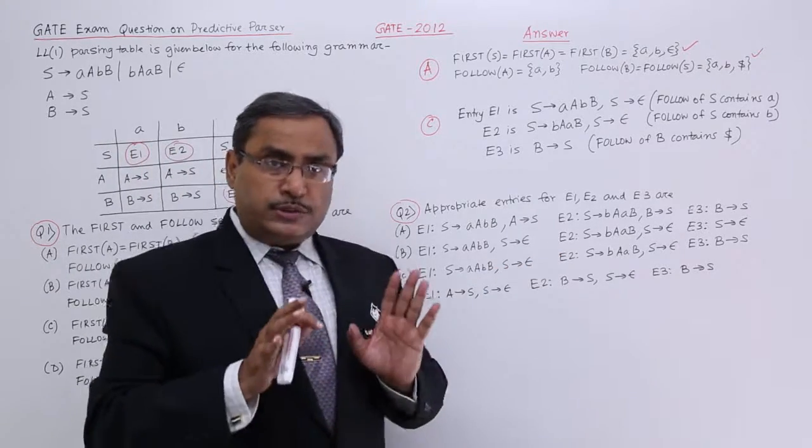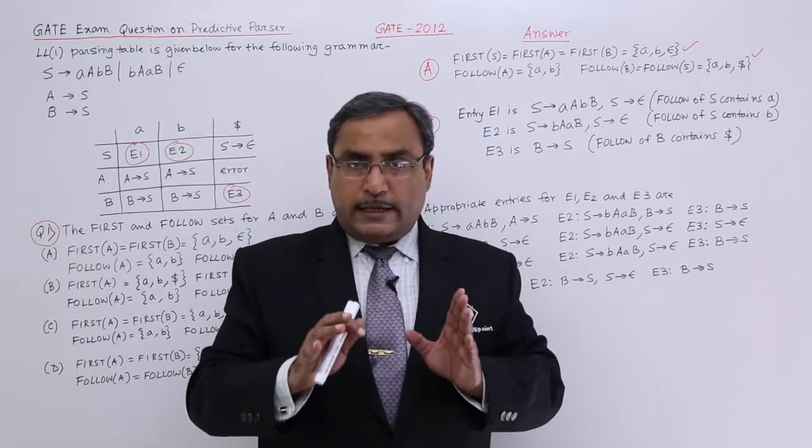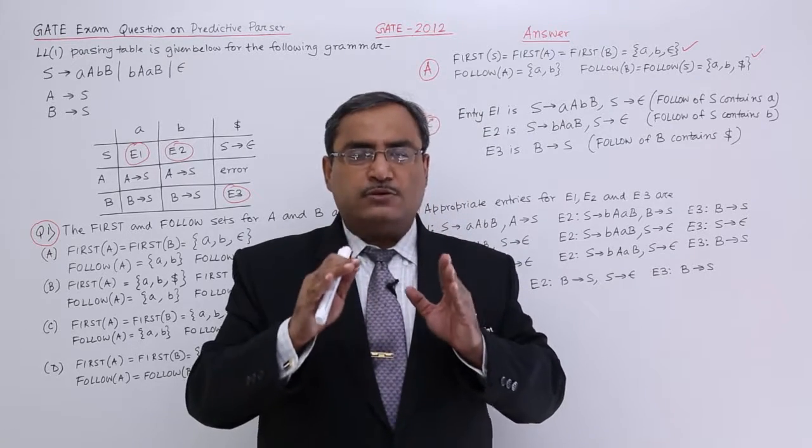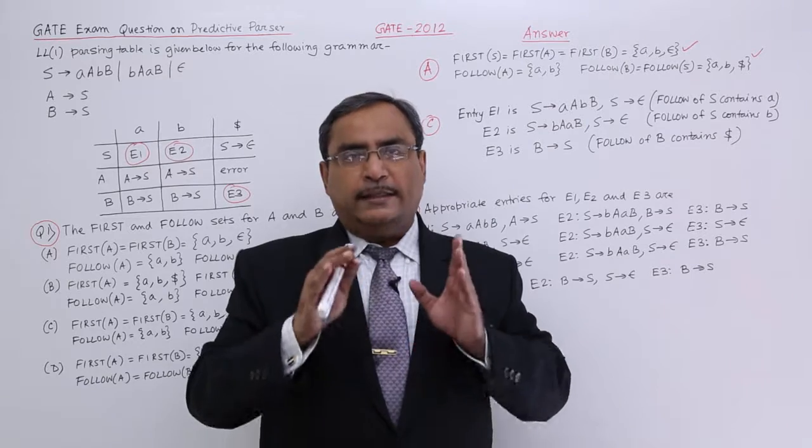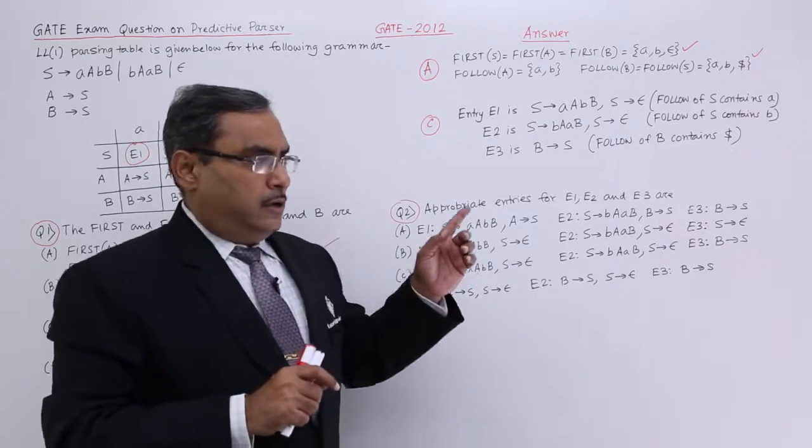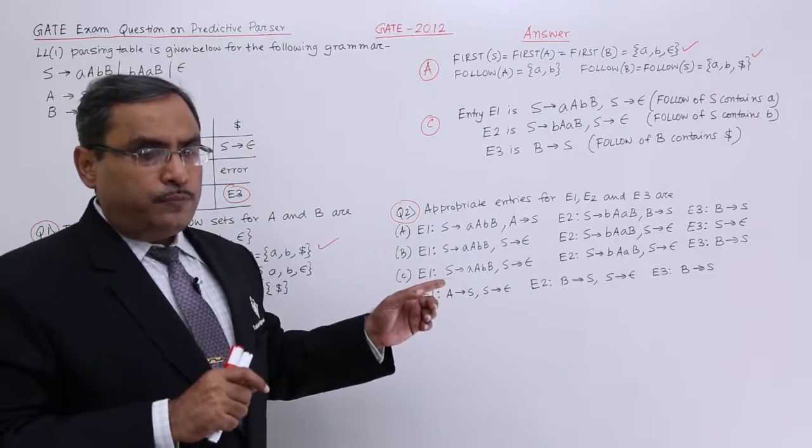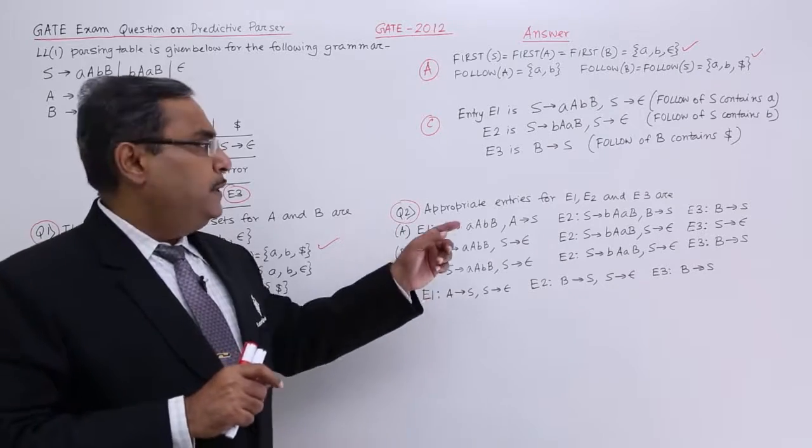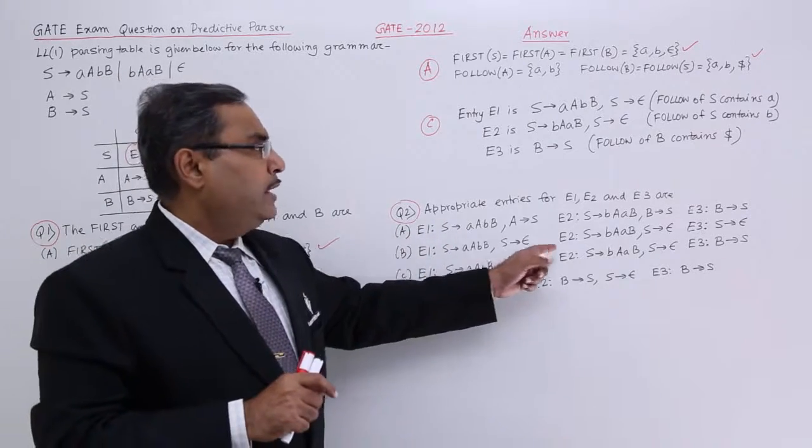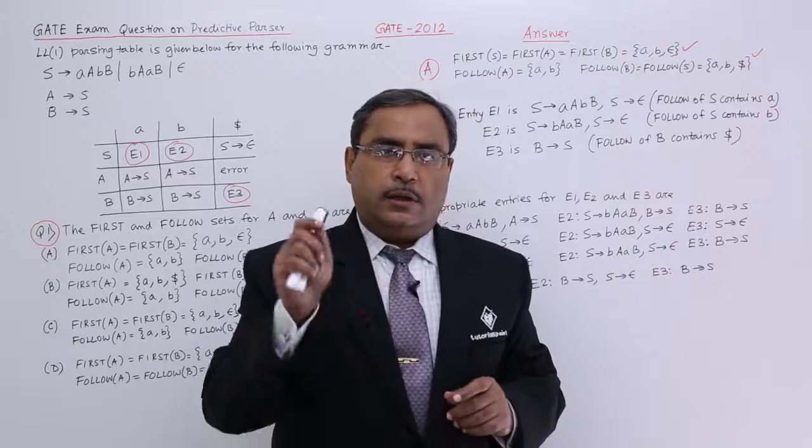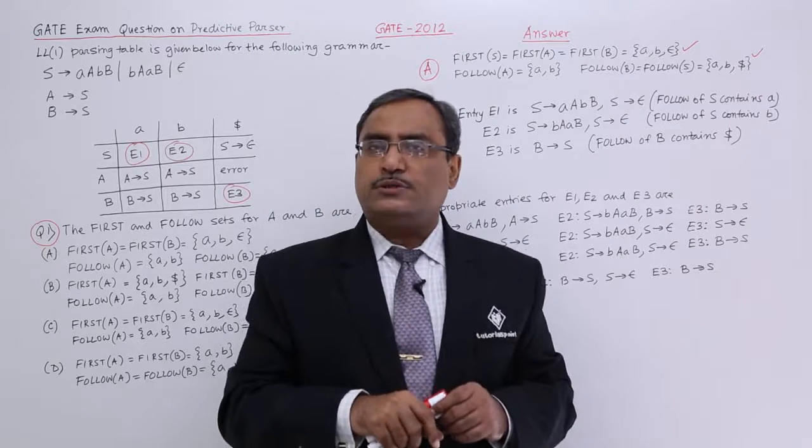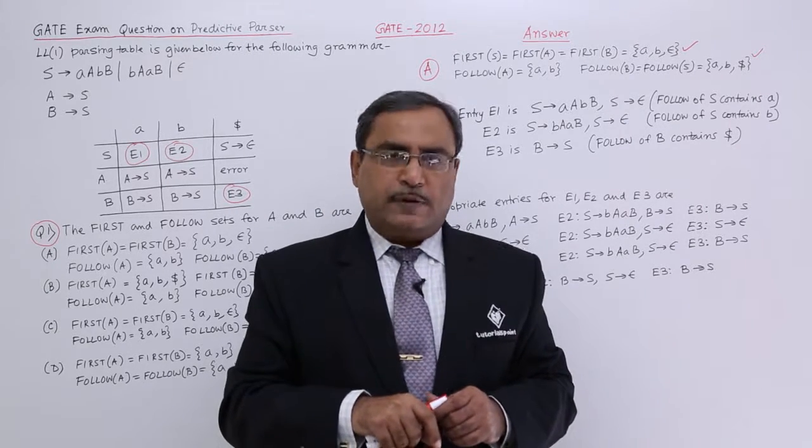If such question comes, then in that case please go on calculating first then using first go on calculating follow and then from the parsing table rules from the predictive parsing table rules please calculate E1, E2, E3 and put the tick at the right option. In this way these questions can be answered. Thanks for watching this video.